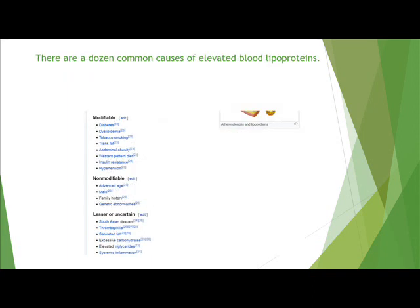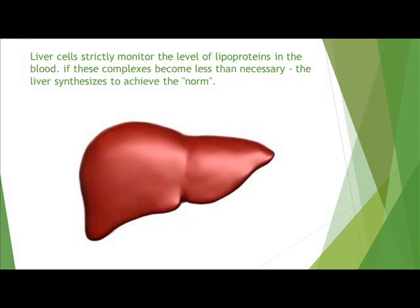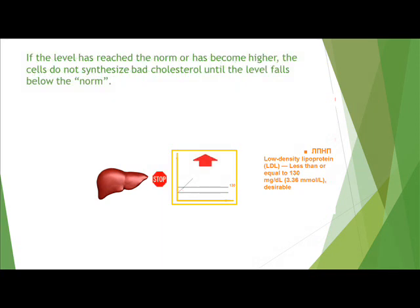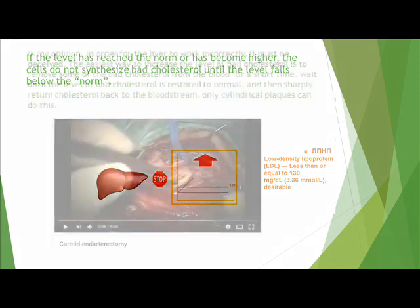There are a dozen common causes of elevated blood lipoproteins. Liver cells strictly monitor the level of lipoproteins in the blood. If these complexes become less than necessary, the liver synthesizes more to achieve the norm. If the level has reached the norm or has become higher, the cells do not synthesize bad cholesterol until the level falls below the norm.